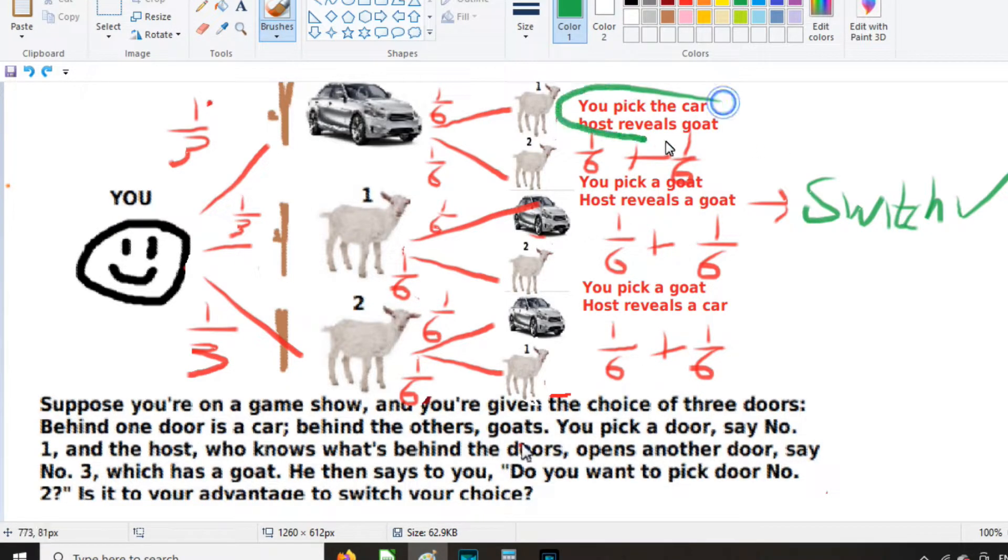In this scenario, when we switch, you pick the car, host reveals a goat. Well, whenever we switch in this scenario, we lose. So we don't want to switch. So switching is profitable here, and it's not profitable here. And we have the exact same odds of getting here as we do getting here. So half the time switching will make us win, and half the time switching will make us lose.